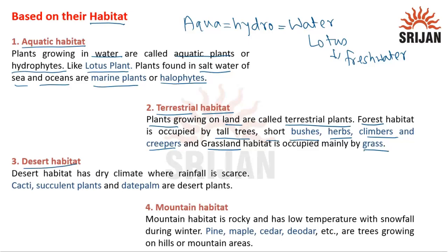Desert habitat has a dry climate where rainfall is scarce. Cacti, succulent plants, and date palm are desert plants. Mountain habitat is rocky and has low temperature with snowfall during winter. Pine, maple, cedar, deodar, etc. are trees growing in hills or mountain areas.